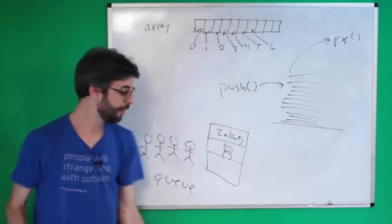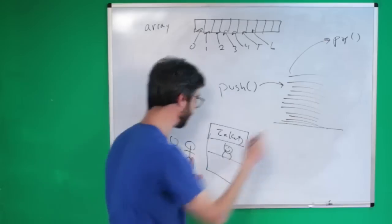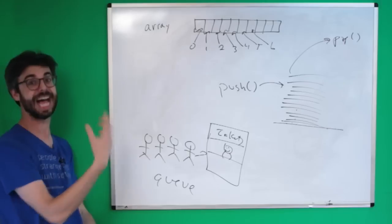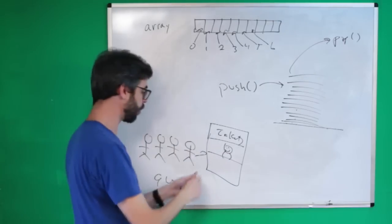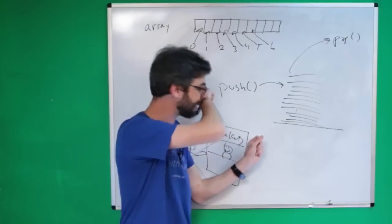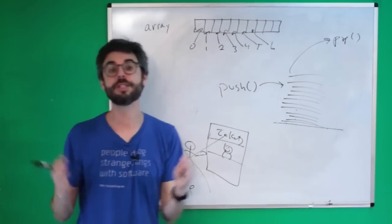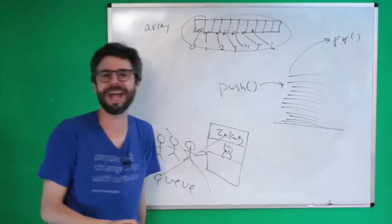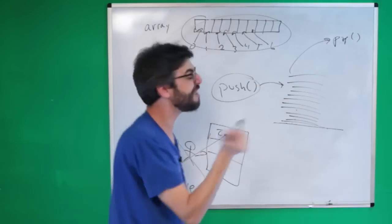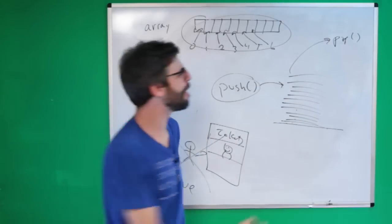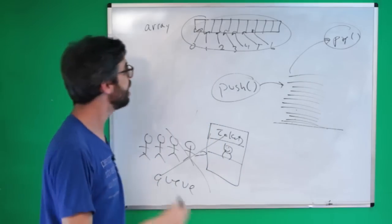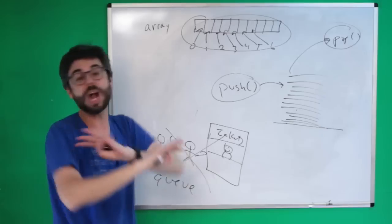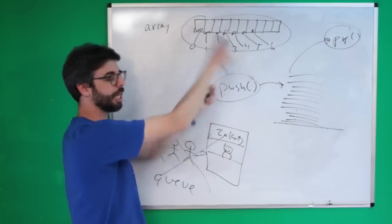In a queue, the first person in line is the first to get tickets — you would never sell tickets to the last person in line. But in this project we're using a stack — last in, first out. How do you program a stack? There are all sorts of ways, but I'm just going to use a JavaScript array, because the JavaScript array has a push function that adds things to it and a pop function that removes them. Even though an array has indexes and can be modified in the middle, we're only going to use push and pop.